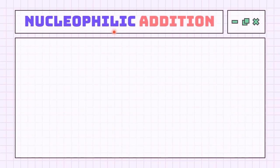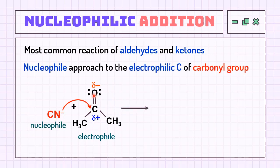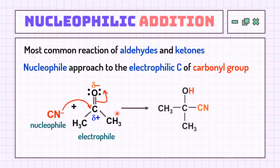Nucleophilic addition means a nucleophile is added to the molecule. This is the most common reaction of aldehydes and ketones. First, the nucleophile approaches the electrophilic carbon of the carbonyl group. Then, one bond of the double bond breaks, giving all the electrons to form an O⁻ intermediate. Finally, a series of reactions takes place to form the product with the nucleophile attached.